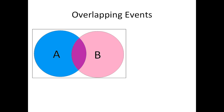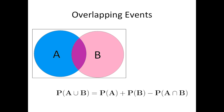Now let's look at overlapping events. In this Venn diagram, you can see that there's overlap between events A and B. In this case, we need to use a different formula: the probability of A or B equals the probability of A plus the probability of B minus the probability of A and B. This takes into account the overlap of A and B. If we were to just add the probability of A plus the probability of B, the purple overlap would end up getting counted twice. This is why we subtract the probability of A and B, so this area only gets counted one time.